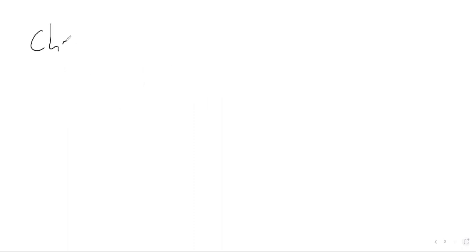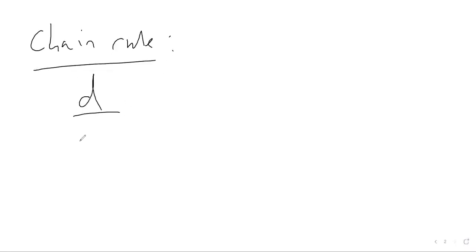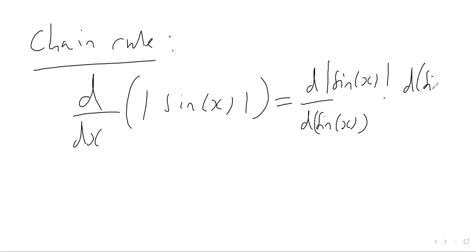By using the chain rule, we can differentiate the absolute value of the sine function. Using our chain rule formula, we know this is the same as differentiating the modulus of sine x with respect to sine x, and then multiplying that by the derivative of sine x with respect to x.